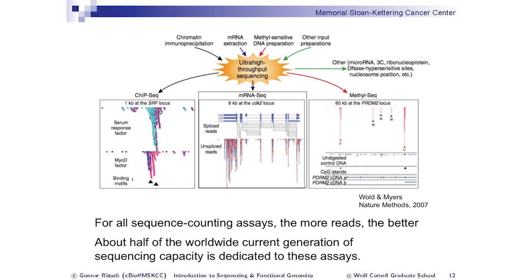What we can use the sequencing technology for is not only to sequence the genomes but also to do counting. The question is: what do you count? There are a lot of biochemical preparations — chromatin immunoprecipitation, mRNA extraction, methyl-sensitive DNA preparation, and others. I will describe two techniques: ChIP-seq and RNA-seq. You've heard about RNA-seq quite a bit, so maybe I'll make that shorter and spend more time on ChIP-seq.